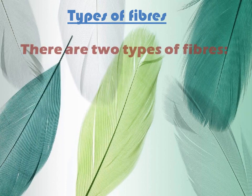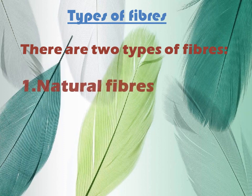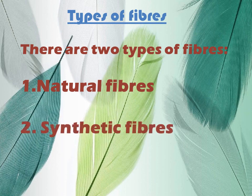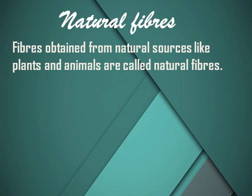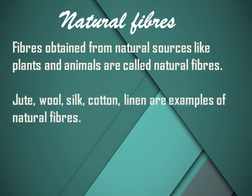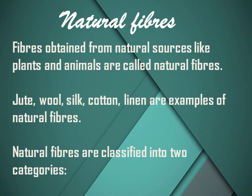Let's discuss about types of fibers. In the previous classes you have studied that fibers have been classified into two broad categories on the basis of their origin or sources. Fibers obtained from natural sources like plants and animals are called natural fibers. Jute, wool, silk, cotton, and linen are examples of natural fibers. Natural fibers are classified into two categories: plant fibers and animal fibers.